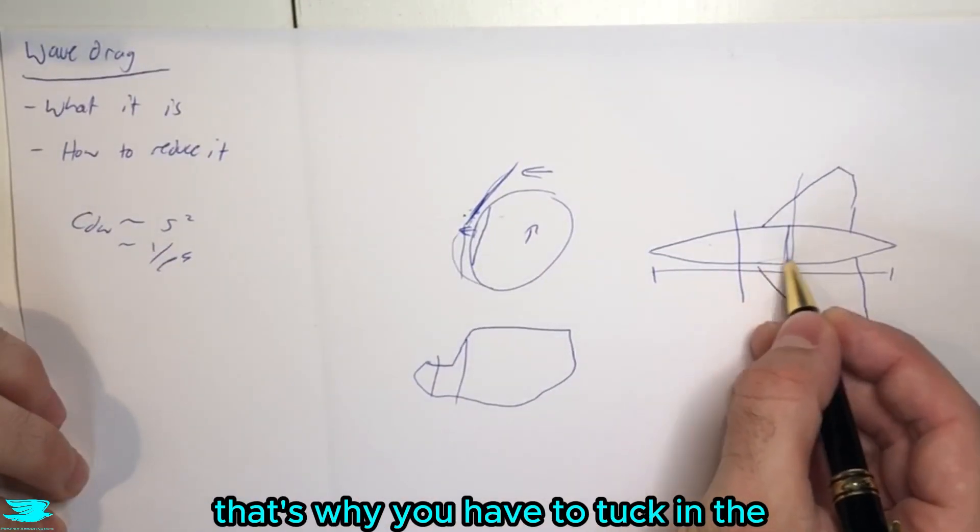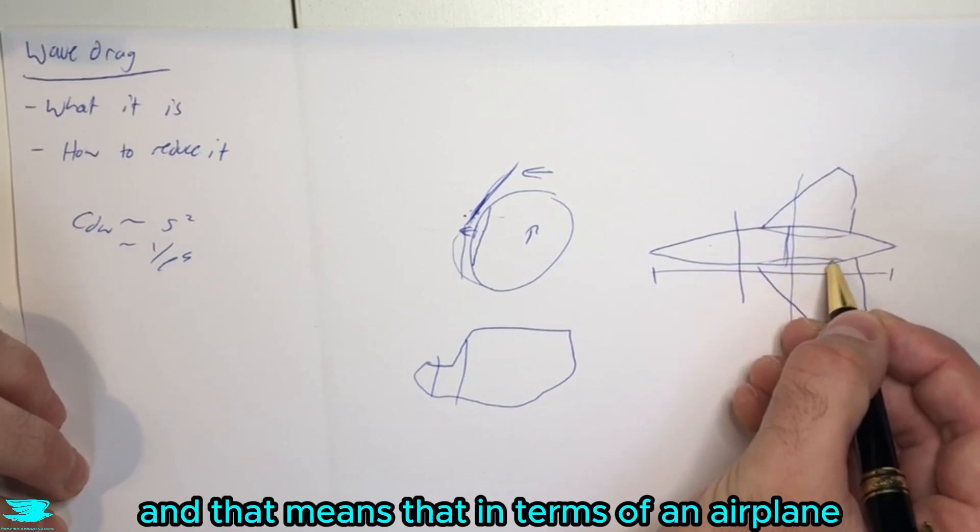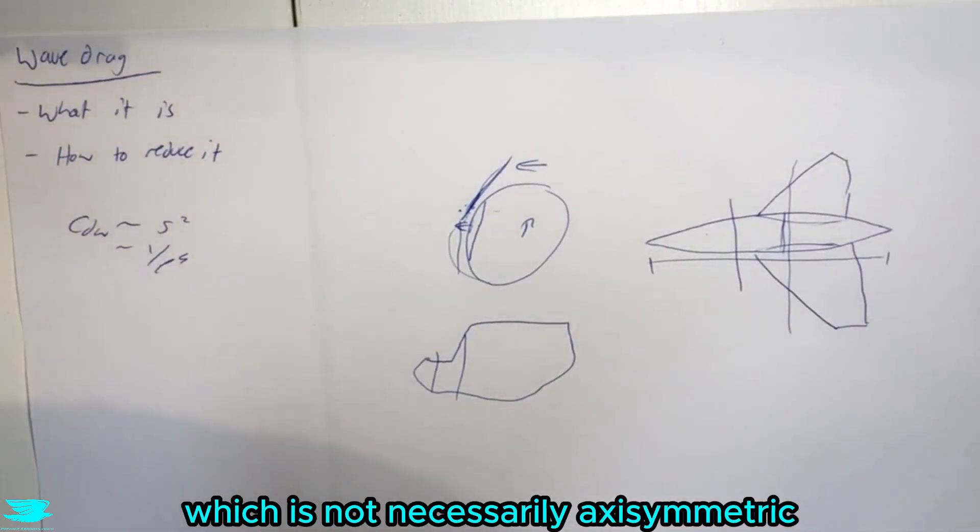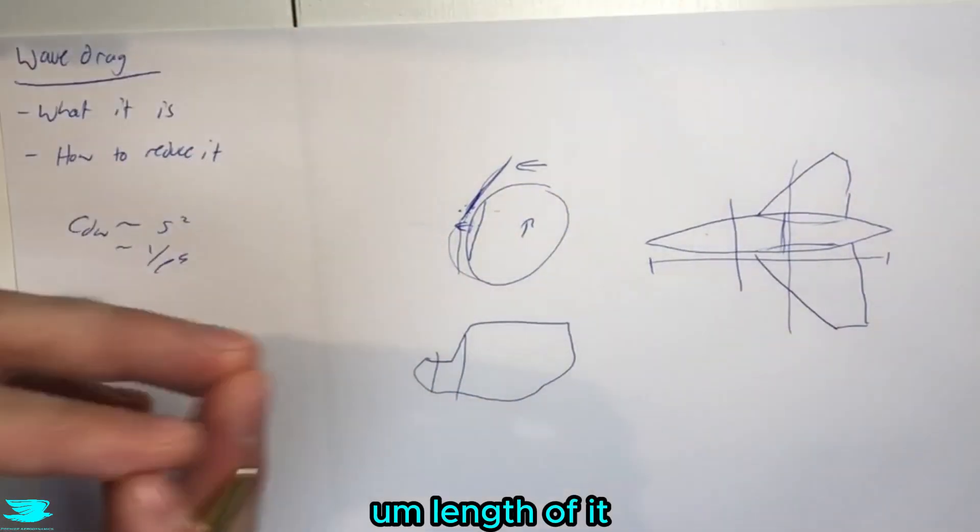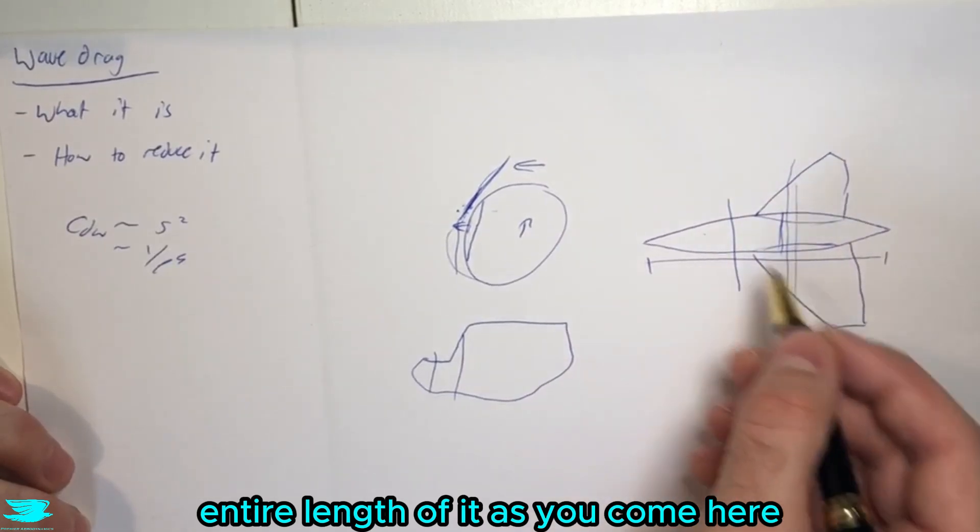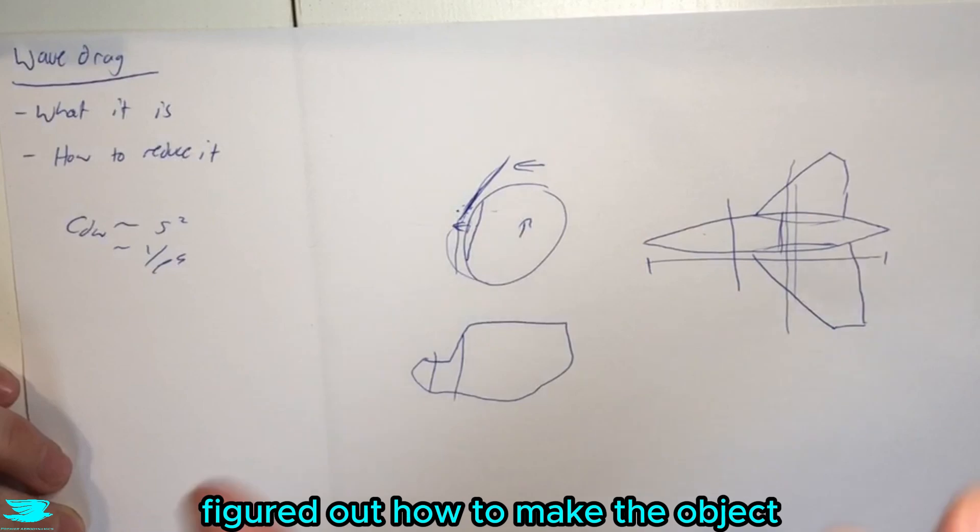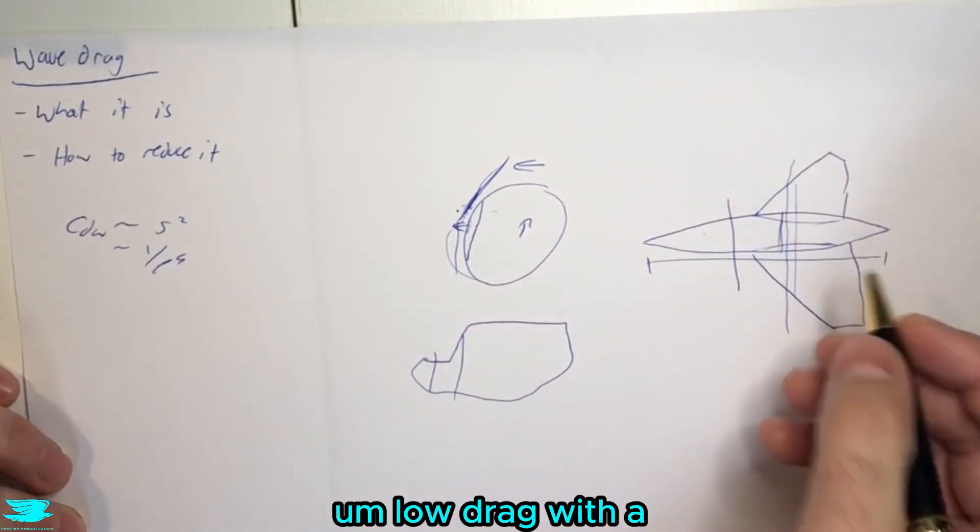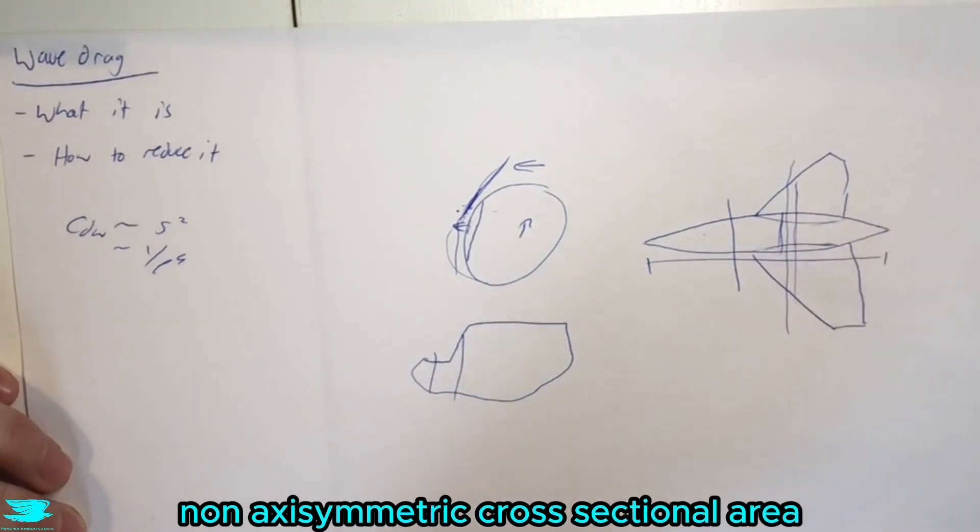So that's why you have to tuck in the fuselage a little bit here. And that means that in terms of an airplane, which is not necessarily axisymmetric along the entire length of it, for example, here, this is not axisymmetric along the entire length of it, because you come here, it's not axisymmetric. Then a guy called Richard Jones, slick Rick to his friends as well, figured out how to make the object low drag with a non-axisymmetric cross-sectional area.